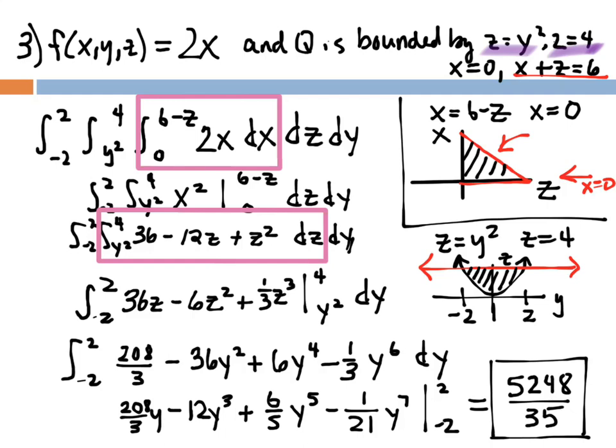Integrating with respect to z gives 36z - 6z² + ¹⁄₃z³, evaluated from y² to 4. Plugging in 4 gives ²⁰⁸⁄₃. Subtracting the y² evaluation yields ²⁰⁸⁄₃ - 36y² + 6y⁴ - ¹⁄₃y⁶. Integrating that with respect to y gives ²⁰⁸⁄₃y - 12y³ + ⁶⁄₅y⁵ - ¹⁄₂₁y⁷, evaluated from -2 to 2. Using a calculator with y1(2) - y1(-2) gives a decimal we convert to a fraction: the answer is ⁵²⁴⁸⁄₃₅.